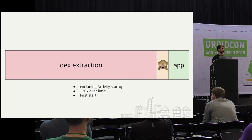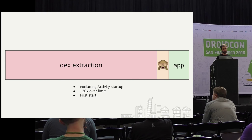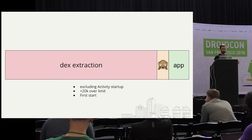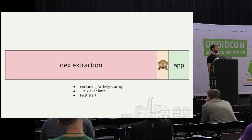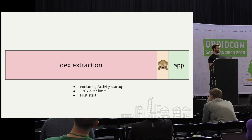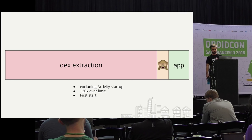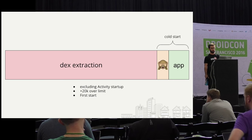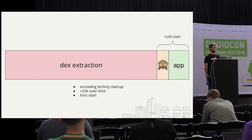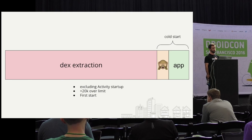I'm going to run a trace from the times we set up before — application attachBaseContext to end of onCreate — excluding activity for simplicity's sake. Here's a graphic that approximates what that looks like. This is for the Yelp app inflated to 20,000 over the limit, reflecting a first start. The three categories I've labeled are: dex extraction, the monkey-patching part, and then your application startup. When you look at this, you see how incredibly dominant the dex extraction part is.